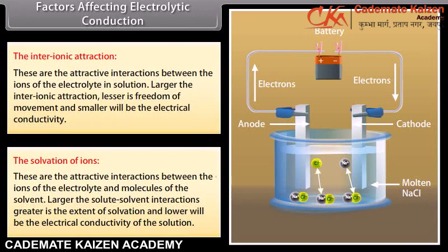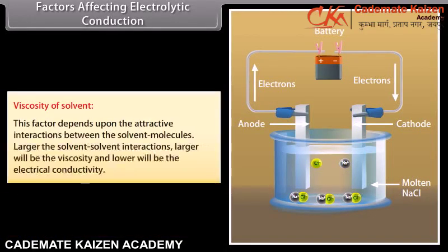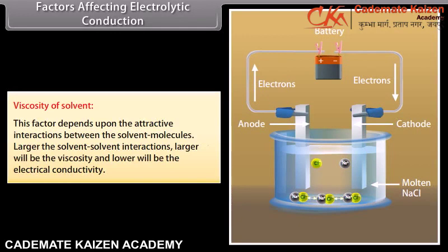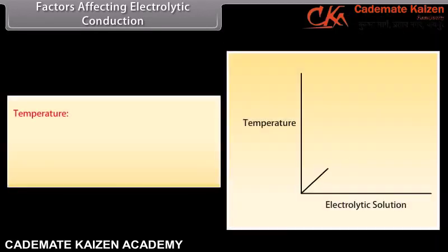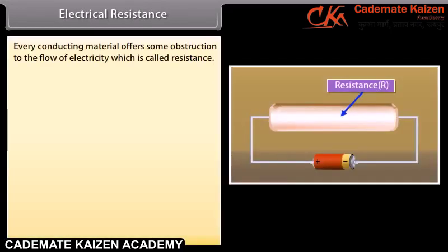Classification of electrolytes: Depending upon the extent of ionization, electrolytes are classified into strong electrolytes and weak electrolytes. Strong electrolytes are almost completely ionized in aqueous solutions — for example HCl, NaOH, and KCl. Weak electrolytes ionize to a smaller extent and have a low degree of ionization; their aqueous solution contains ions in equilibrium with undissociated molecules. The degree of ionization of weak electrolytes increases with dilution and approaches unity at infinite dilution — for example NH₄OH and CH₃COOH.